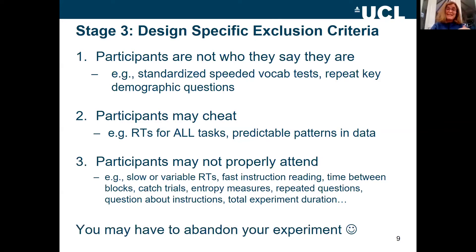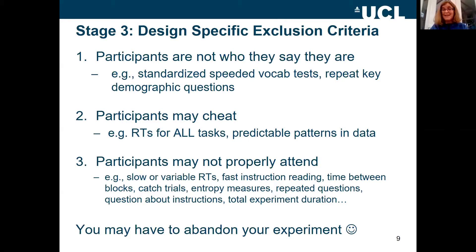This is the point where you may decide to abandon your experiment. If you can't design specific exclusion criteria that you are confident will remove those participants whose data you don't want to analyse, this is the point where you give up. In my experience that's pretty rare, but this is the point where you have to at least consider that as an option.